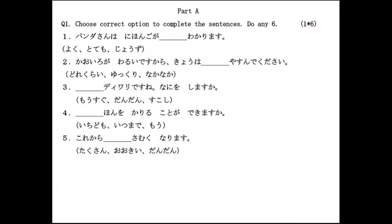In Part A, the first question is: choose the correct option to complete the sentences. The first sentence is 'Panda-san wa Nihongo ga ___ wakarimasu.' The options are yoku, totemo, jouzu. Adverbs like yoku, daitai, sukoshi are used with verbs in affirmative sentences, while amari and zenzen are used in negative sentences. So the correct option is yoku, and the sentence becomes 'Panda-san wa Nihongo ga yoku wakarimasu.' The second sentence is 'Kaohiro ga warui desu kara kyo wa ___ yasunde kudasai.' The correct option is yukkuri, meaning slowly or without hurry.